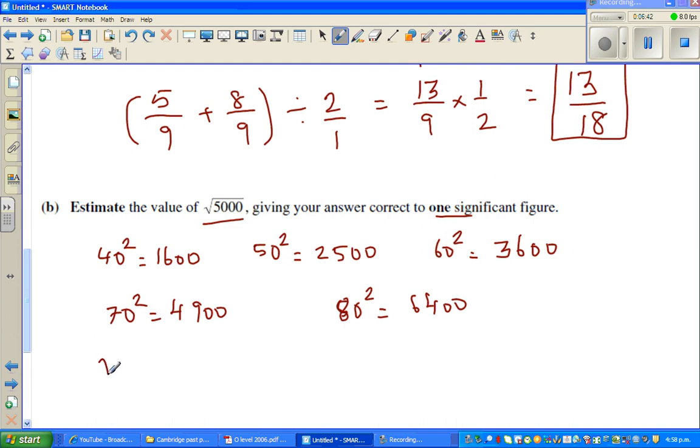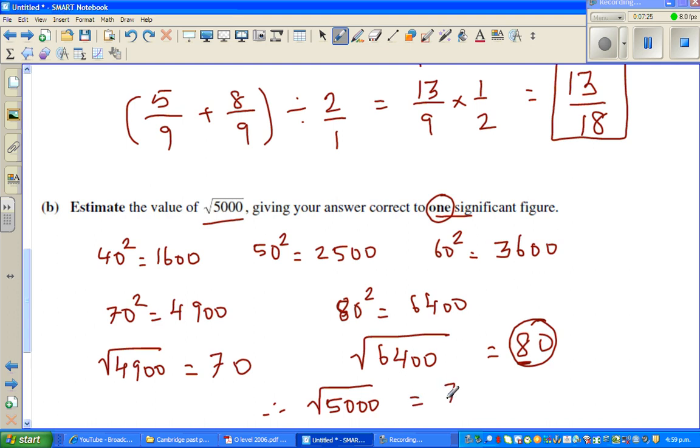So can I say square root of 4900... square root is the opposite of square, it's 70. And square root of 6400 is 80. So you want to write in only one significant figure. So this is a number in one significant figure. Square root of 5000 is very close to 4900. So therefore I can say square root of 5000 in one significant figure is 70.